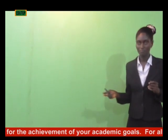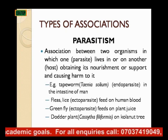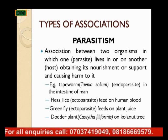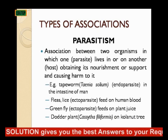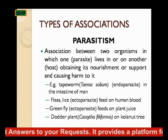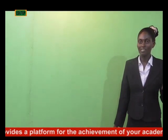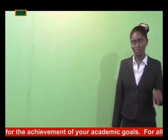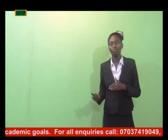Parasitism is the association between organisms in which one lives in or on another. The one that lives on the other is the parasite, and the one being lived on is the host. The parasite lives on the host to obtain its nourishment and support, and also causes harm to it. When an organism lives on another for its own nourishment and support and also causes harm, we call such an association parasitism.